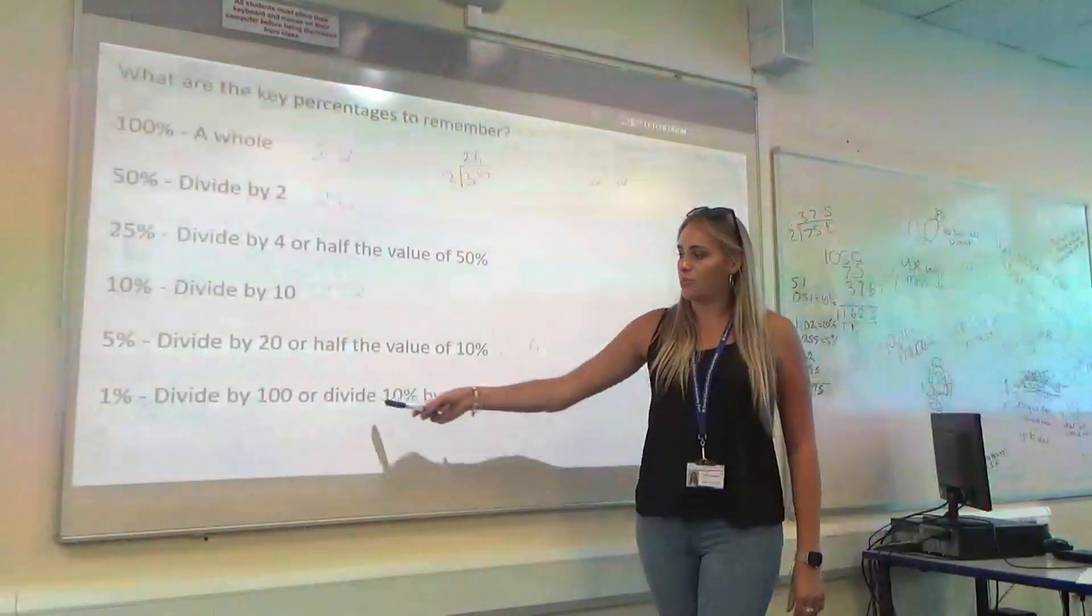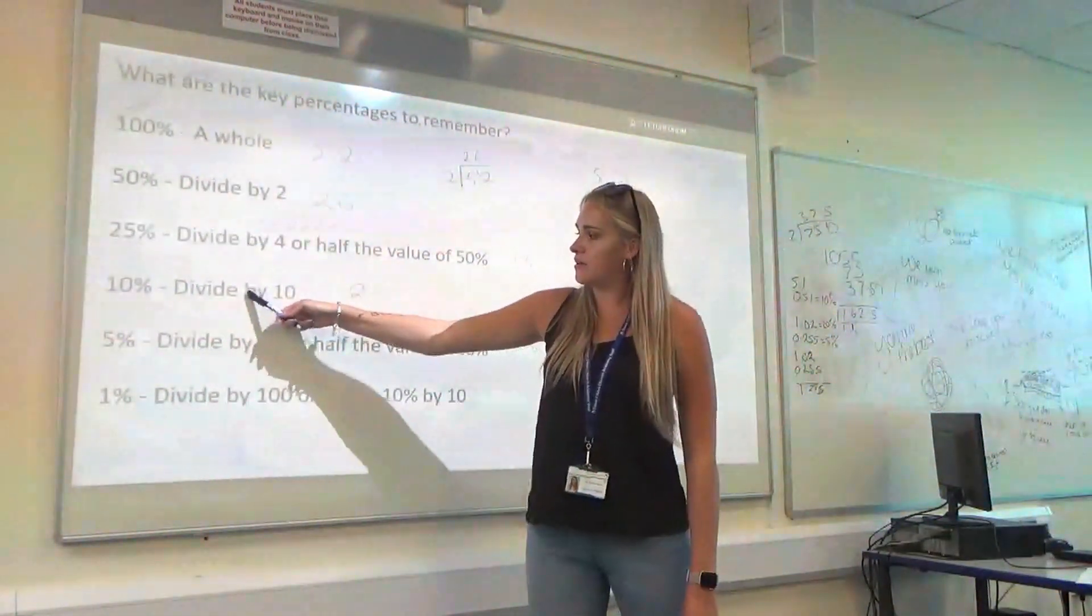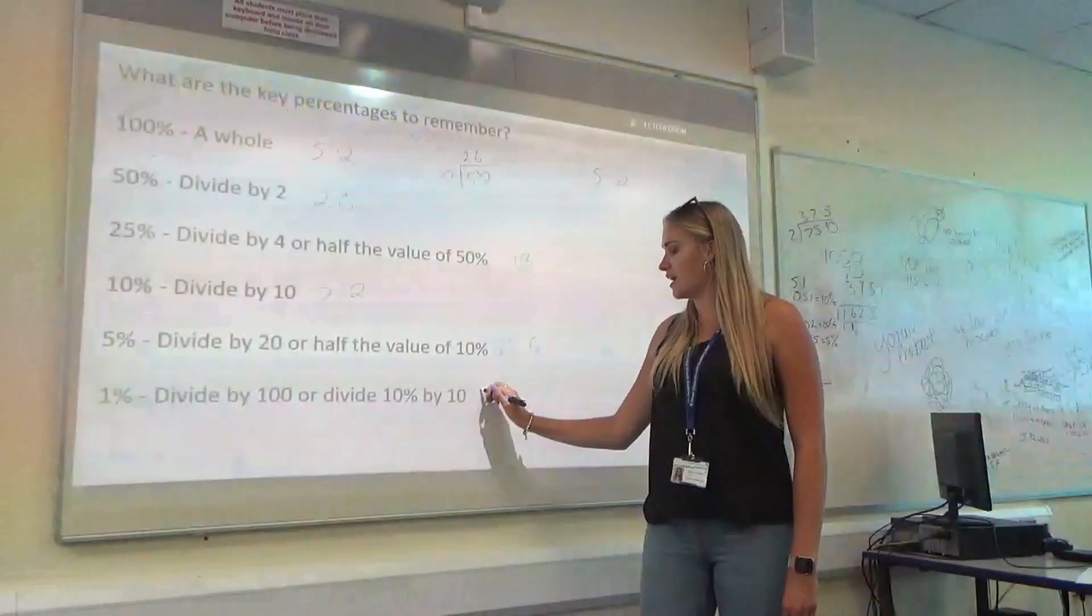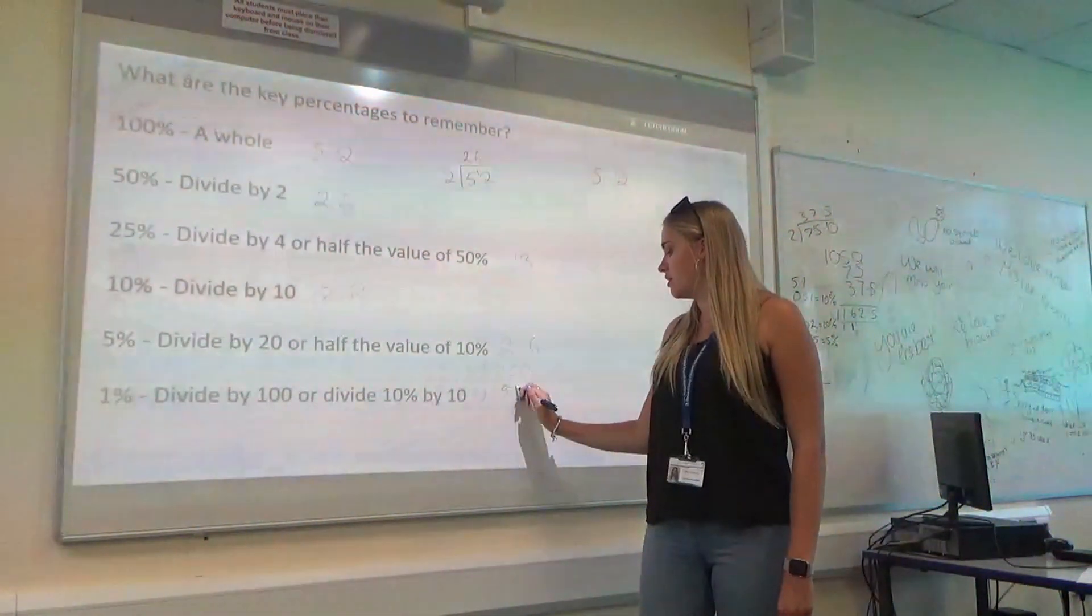And if we've got 1%, we can divide our 10 by another 10. Or your original number by 100. So, you're going to get 0.52.